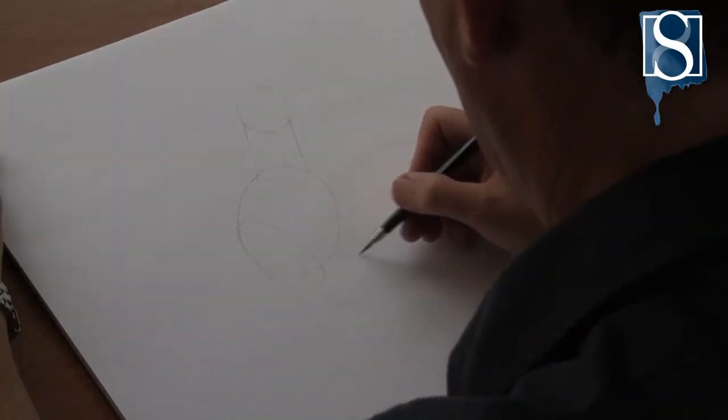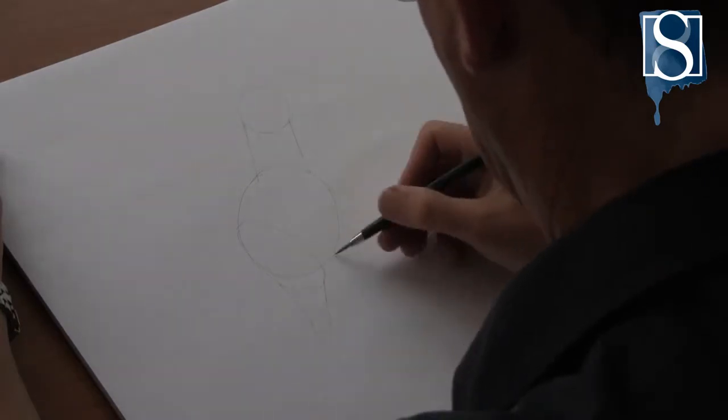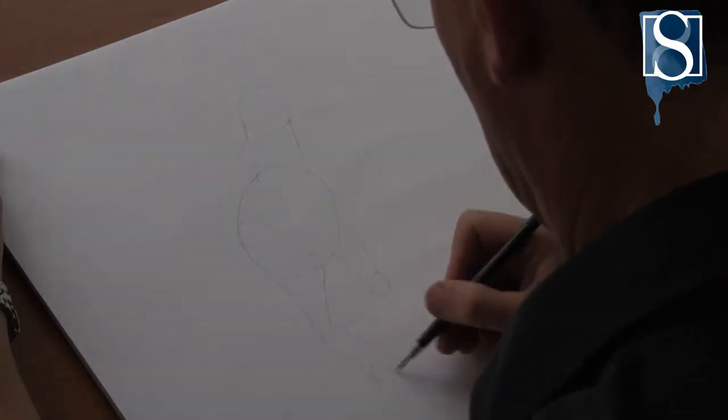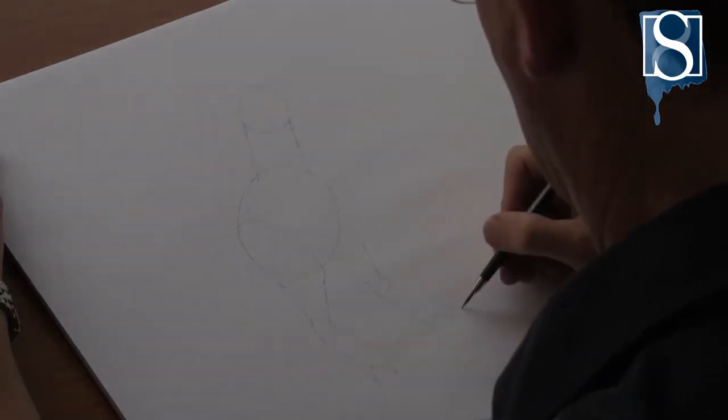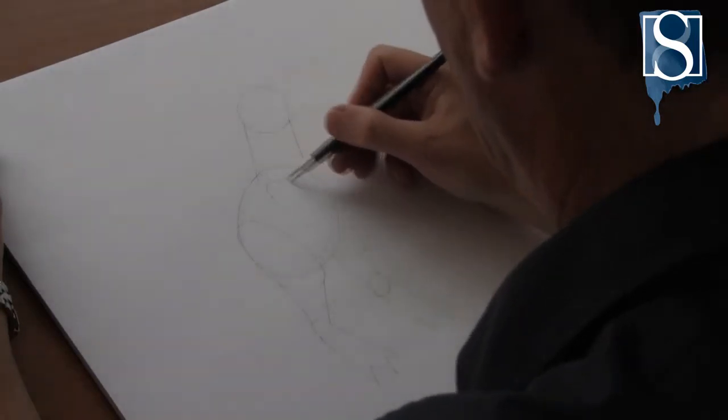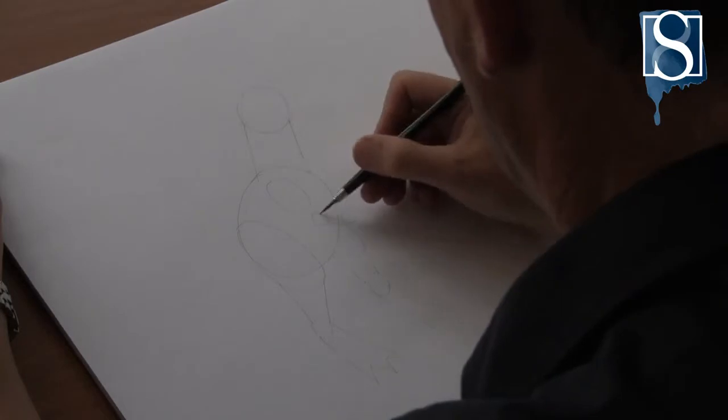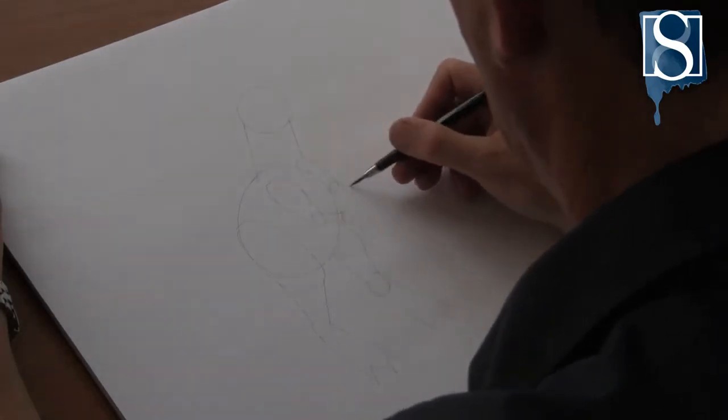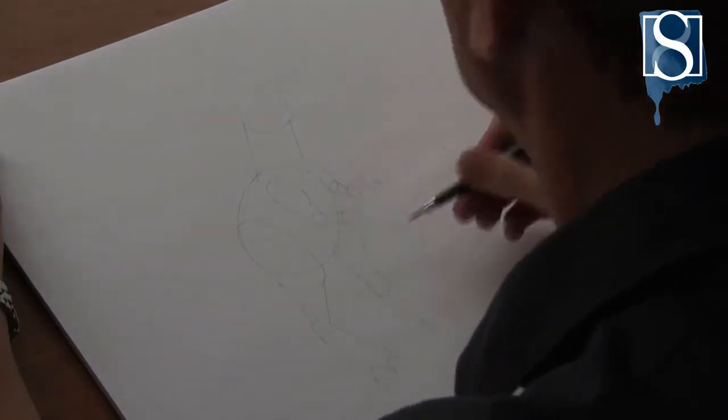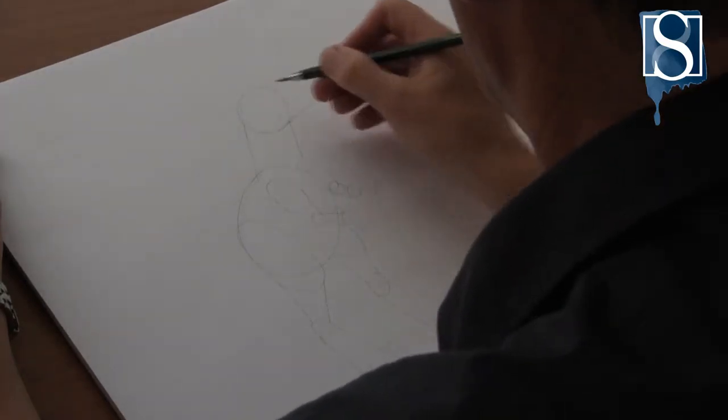Now start drawing the legs, then the arms. Draw a rectangle and a tail.